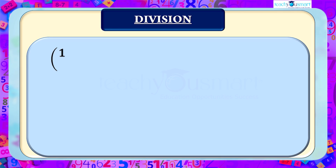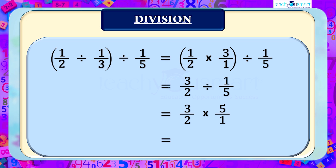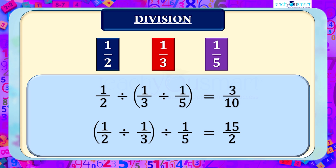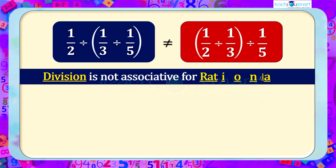The second grouping: 1/2 ÷ (1/3 ÷ 1/5) = 1/2 × 3/1 ÷ 1/5 = 3/2 ÷ 1/5 = 3/2 × 5/1 = 15/2. When dividing by grouping in two different ways, the results are not equal. Therefore, division is not associative for rational numbers.